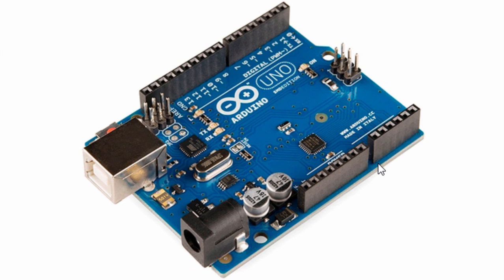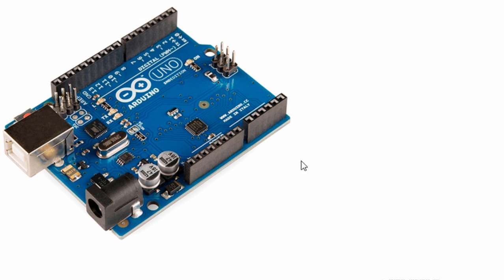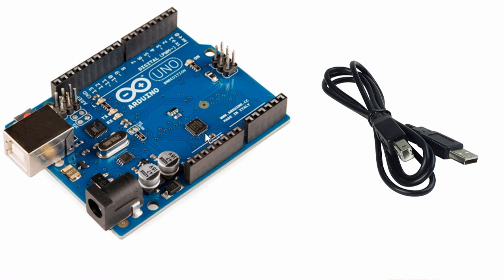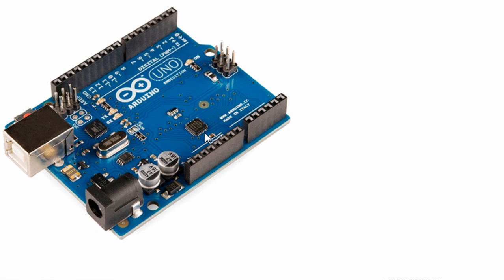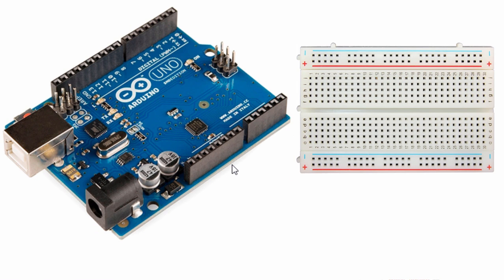Let's get started. Here are a few things you're gonna need to run through this tutorial. The first thing you'll need is the actual Arduino board. You're also going to need a USB cable so that you can program the Arduino — this cable will also power the Arduino board, drawing power from your PC. You'll also need a breadboard, which is very useful for prototyping electronic circuits.